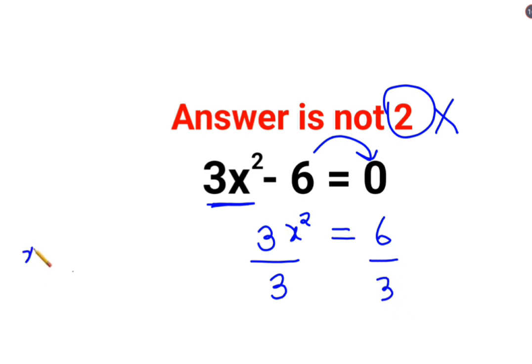So, you get the value of x square as what? 2. Now, since it is x square, in order to find the value of x, you will take square root on both sides.